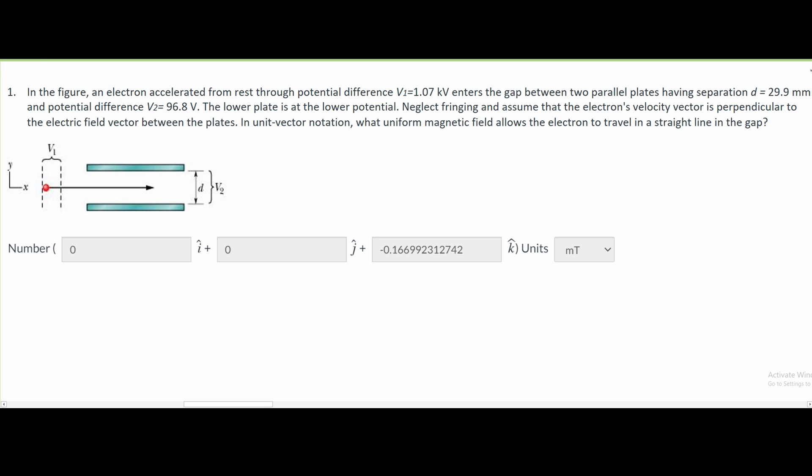Since our electron is only going one direction, as shown by this arrow, we are only going to have one value, and it is going in the k direction. So our i is going to be 0, our j is going to be 0, and we need to find our k value.